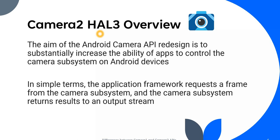Let's move on to camera two, which is based on hardware abstraction layer three — not HAL two, HAL three. The aim of the camera API redesign is to substantially increase the ability of applications to control the camera subsystem, so that apps should be able to control the camera subsystem on Android devices. Camera one was not giving that particular freedom.